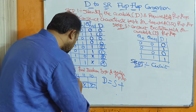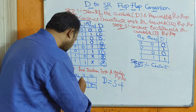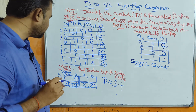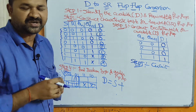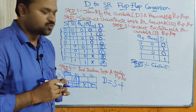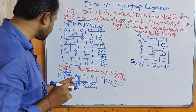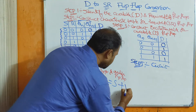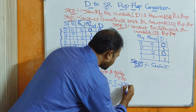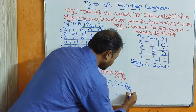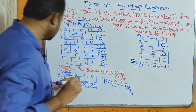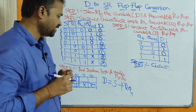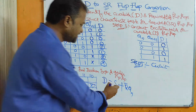Next we can make these two cells into a group. Here S value is changing from 0 to 1, so there is no need to consider S. The R and Qn values are 0 and 1, which gives us R̄Qn. So the final boolean expression for D is: D = S + R̄Qn.